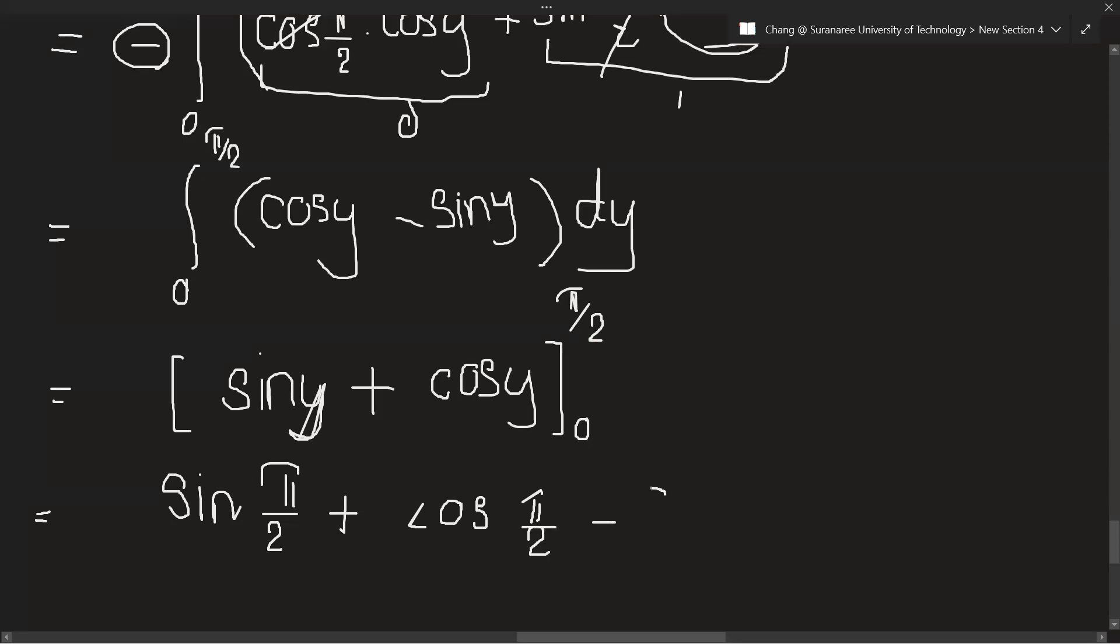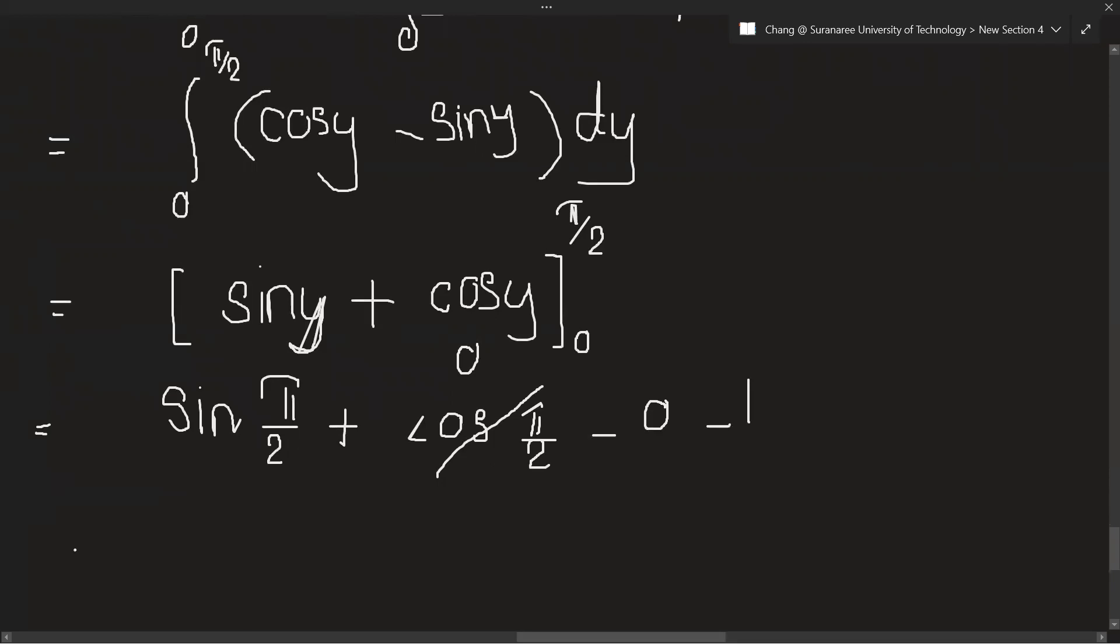Minus sine 0 will get 0. Minus cos 0 will get 1. So this is 0. Sine pi over 2 is plus 1 and minus 1. Okay, so the answer is 0.